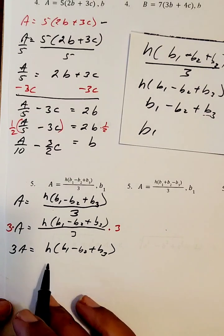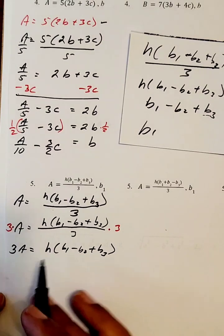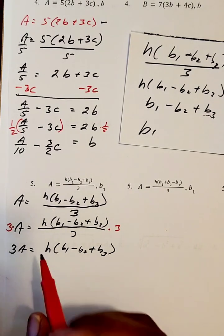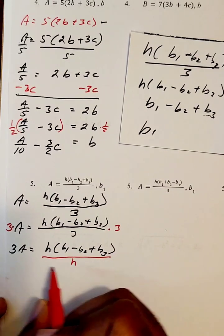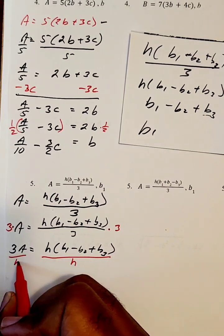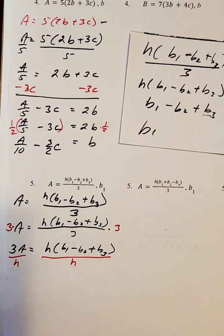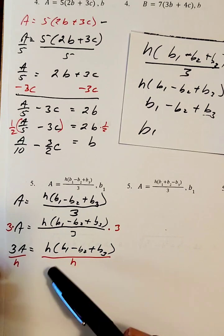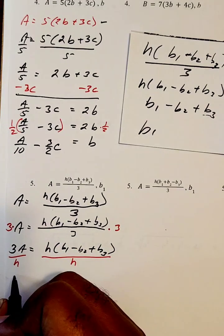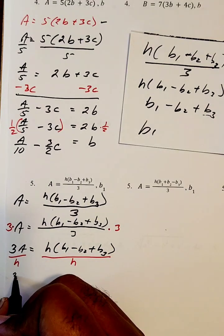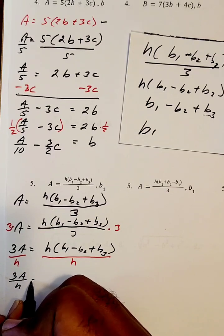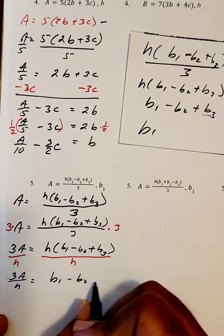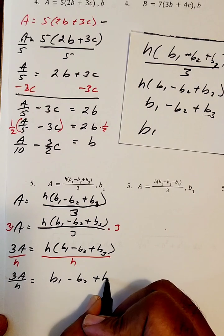Now to get rid of the H — that's a multiplying H — I'm going to use a dividing H. So using a dividing H here and a dividing H there. So 3A over H will equal our quantity B1 minus B2 plus B3.